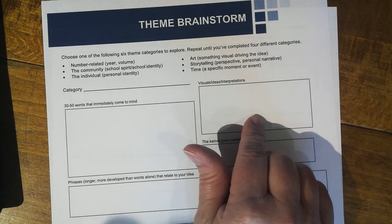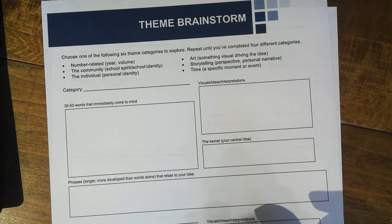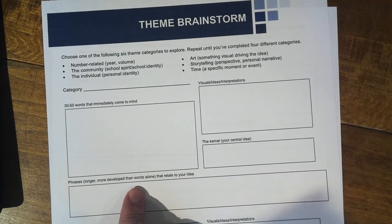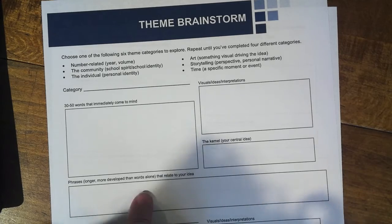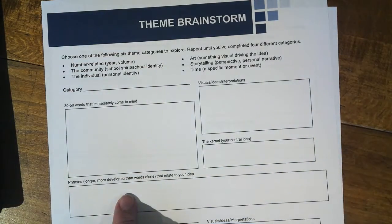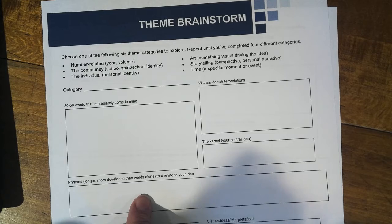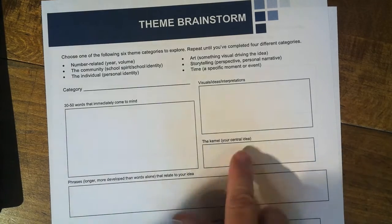'Filling the void' — you might have circles for that, darker colors. Phrases longer and more developed than words alone that relate to your idea — what could some possible headlines be? We also have to keep in mind that we have to name each section on the front end sheet. What are we going to call the people pages? What are we going to call fall? It's not just going to be 'fall' — we give it a slogan itself that relates back to that central theme.